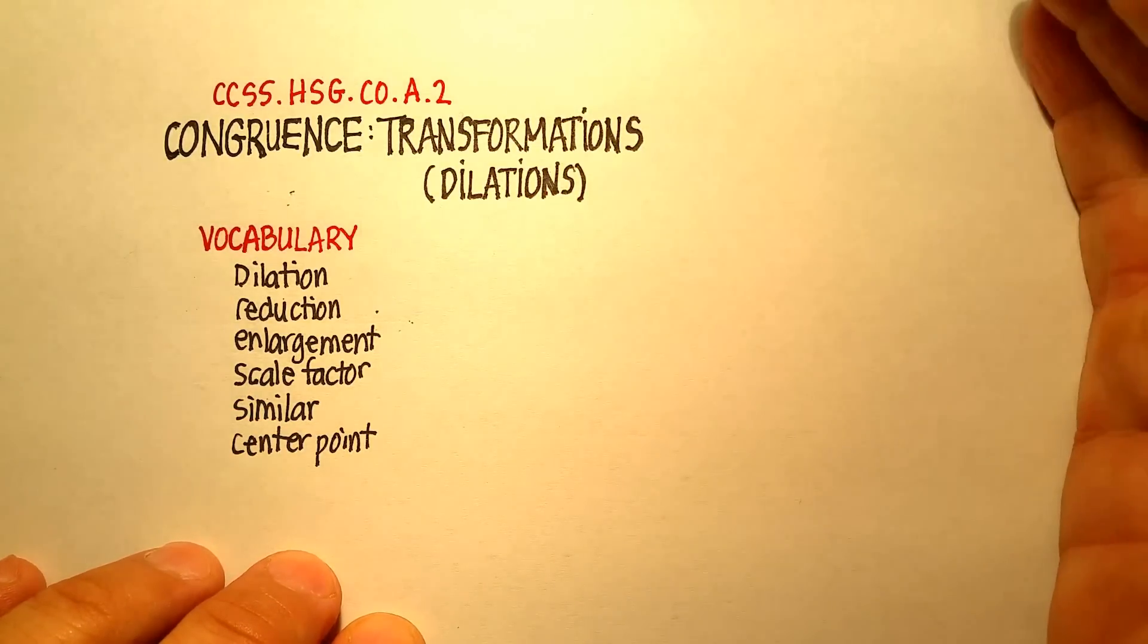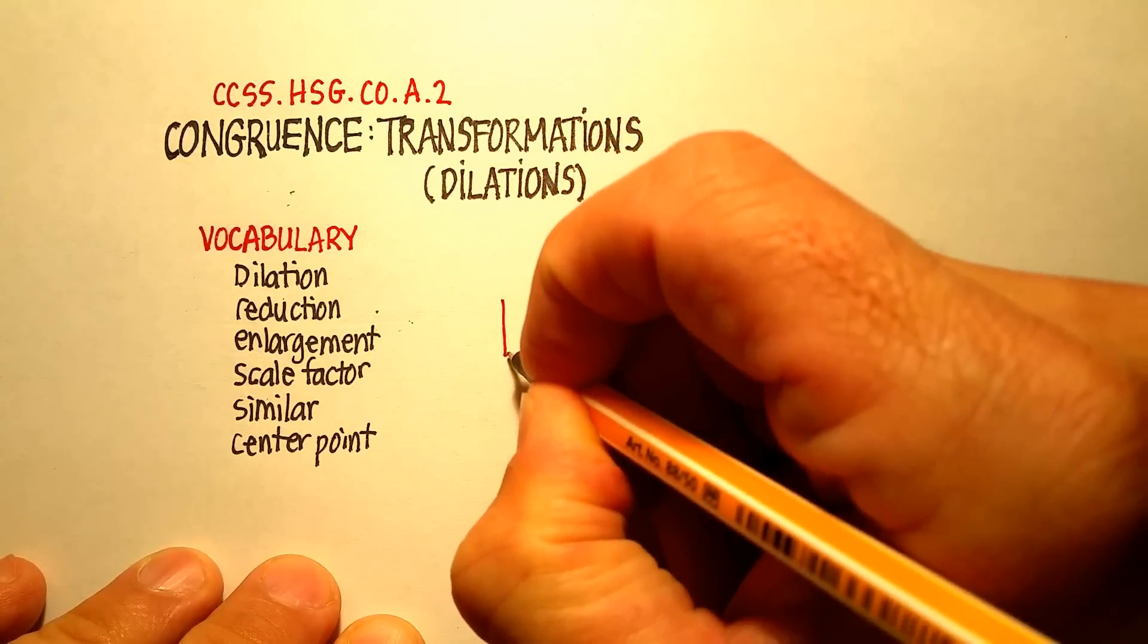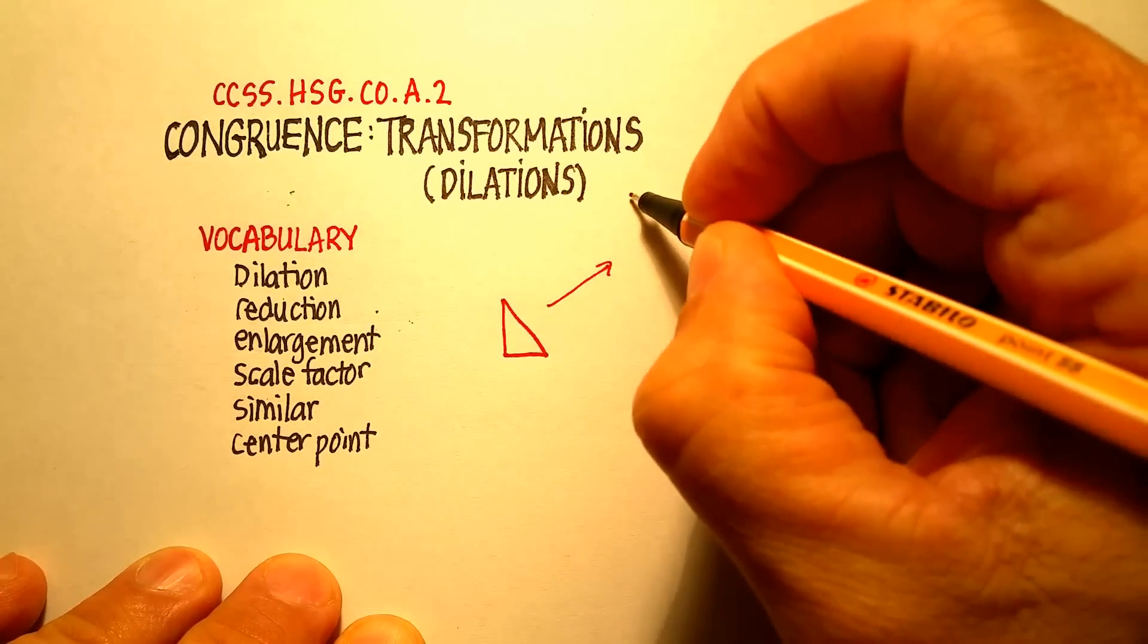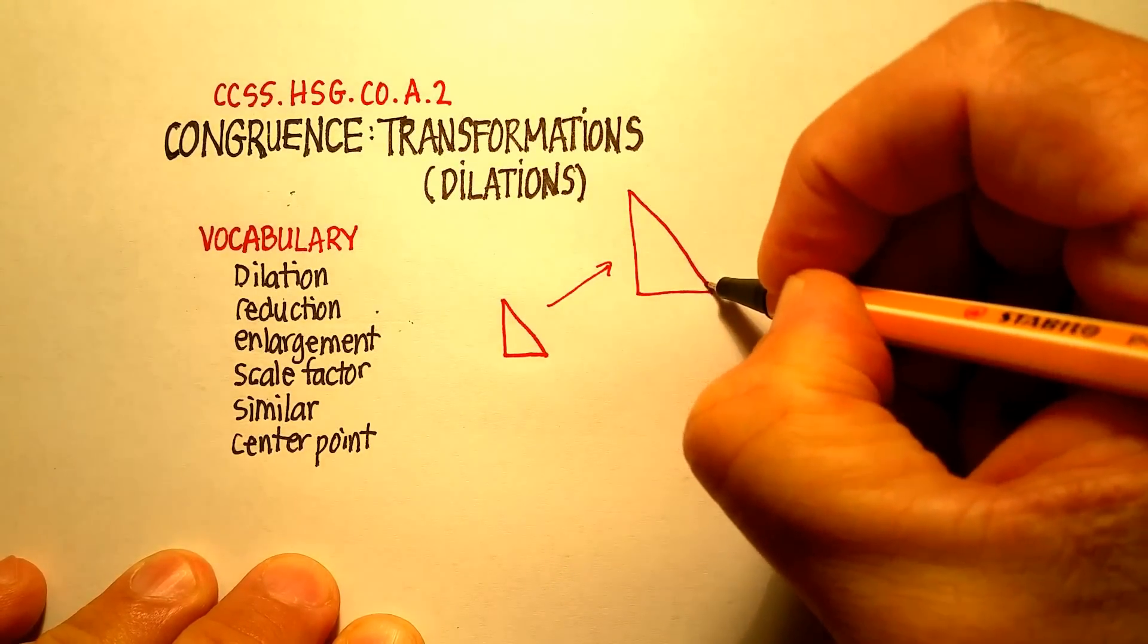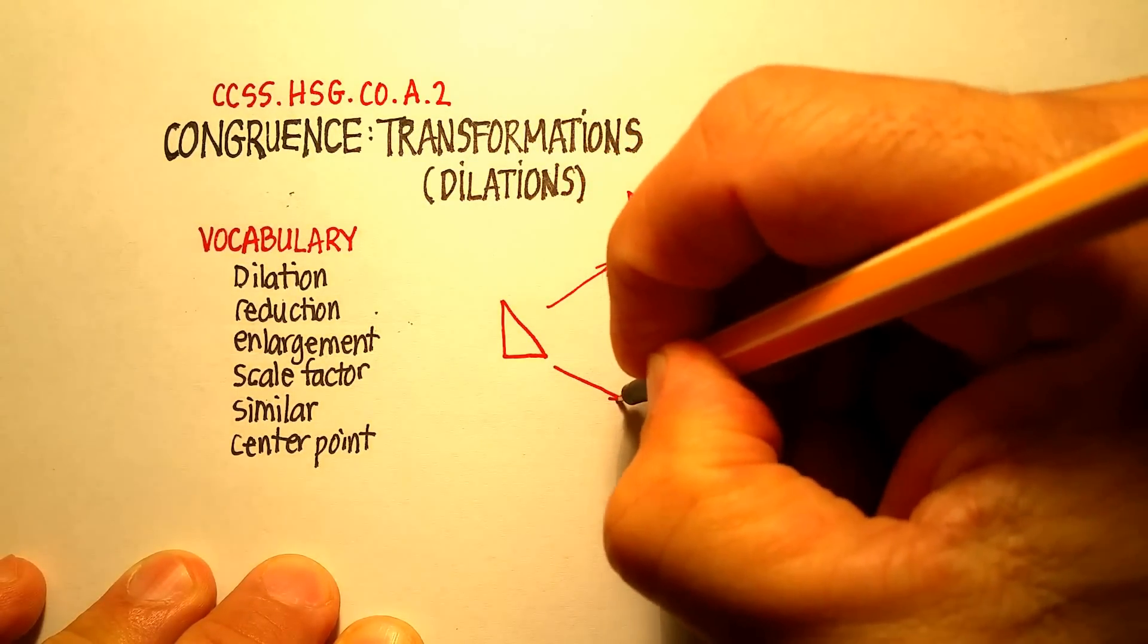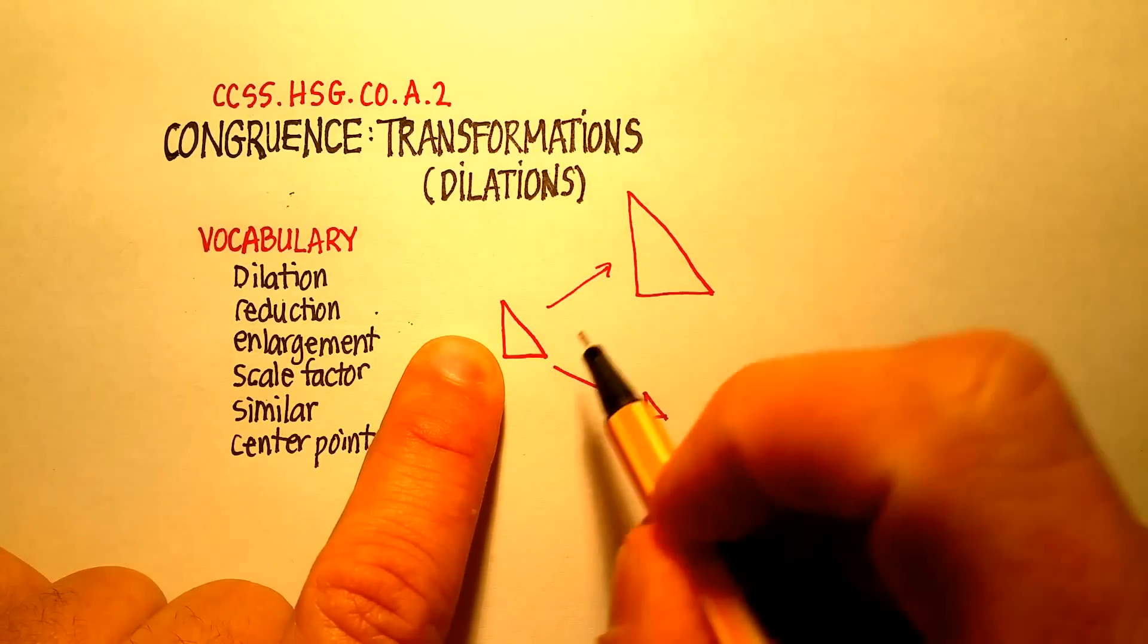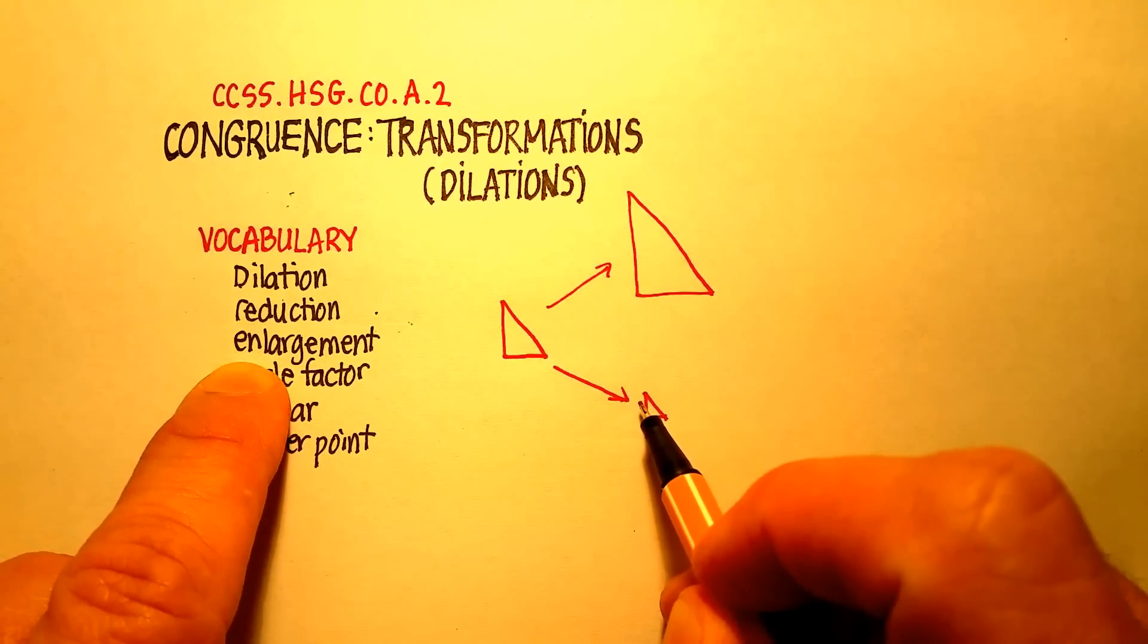Okay, so real quickly, what is a dilation? Basically, a dilation is when you take a figure in the coordinate plane, and let's just take a triangle, and then when you move it, you make it either larger, so it goes from a small size to a large size, or you make it smaller. So a dilation can either be an enlargement or it can be a reduction, and that's where these two vocabulary words come in.